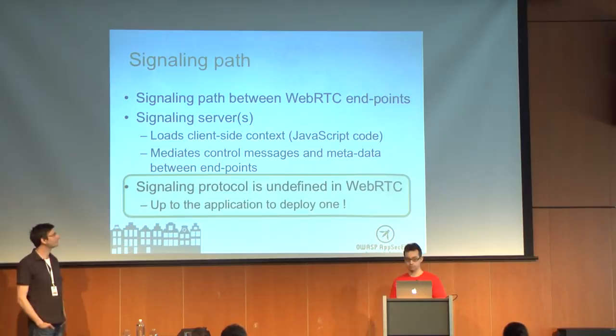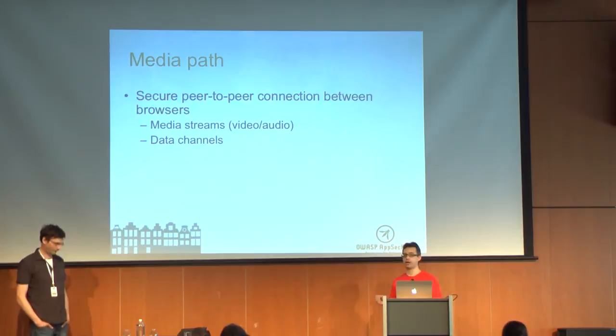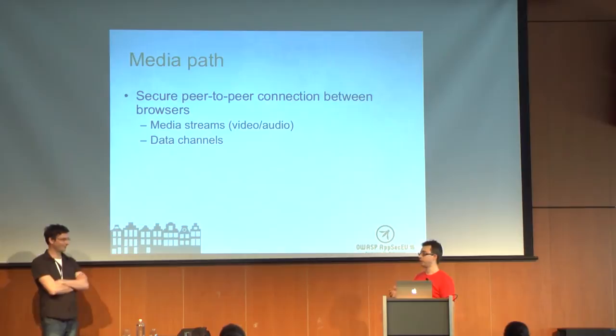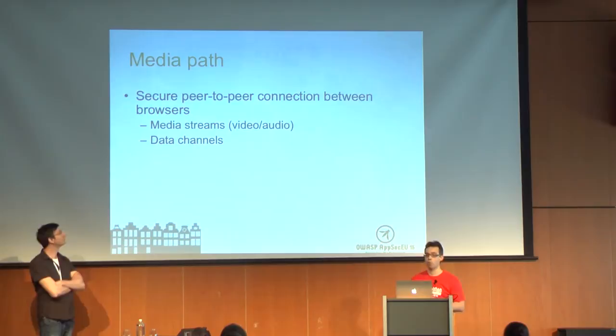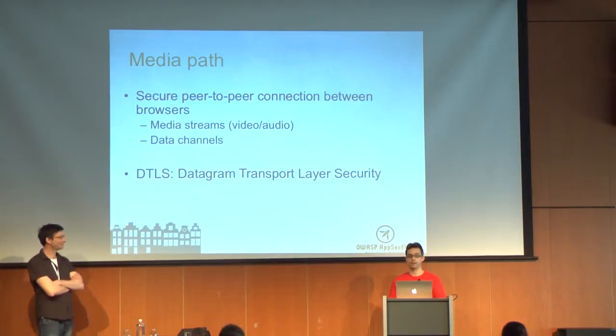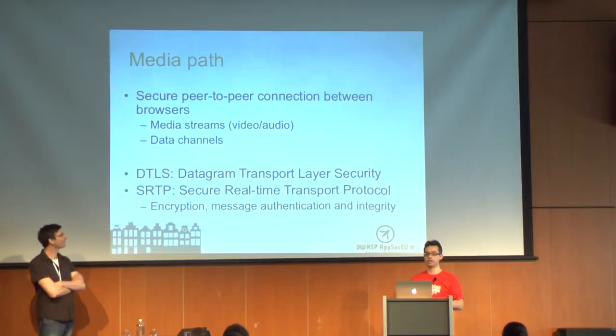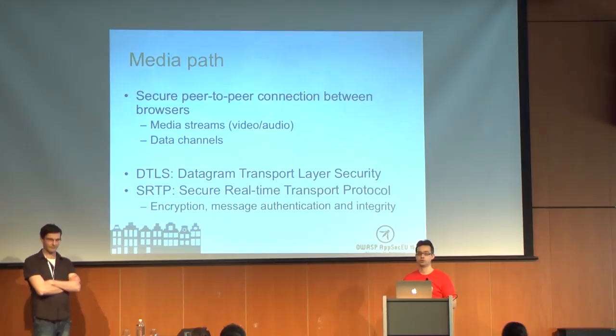For the media path, it's much more standardized. You set up a secure connection between two or more endpoints and use it to exchange video and audio streams. You can have multiple streams over the same peer-to-peer connection, and also a data channel for control messages or data like a chat box. The basic technology is DTLS — a datagram-style protocol using TLS features with UDP, essentially HTTPS over UDP — with SRTP on top for the streaming protocol. These protocols provide encryption, message authentication, and integrity.